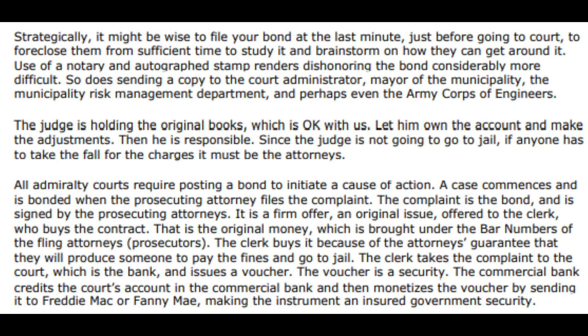A case commences and is bonded when the prosecuting attorney files the complaint. The complaint is the bond, signed by the prosecuting attorneys. It is a firm offer — an original issue offered to the clerk, who buys the contract. That is the original money, which is brought under the bar numbers of the filing attorneys or prosecutors. The clerks buy it because the attorneys guarantee they will produce someone to pay the fines and go to jail. The clerk takes the complaint to the court, which is the bank, and issues a voucher. The voucher is a security. The commercial bank credits the court accounts and then monetizes the voucher by sending it to Freddie Mac or Fannie Mae, making the instrument an insured government security.